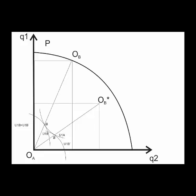And since the origin for individual B has shifted, we have to find another point of indifference curve on the contract curve between OA and OB star that leads to the same level of utility, U1B prime. So U1B is equal to U1B prime. Those are indifferent, and of course, individual A is indifferent as well.